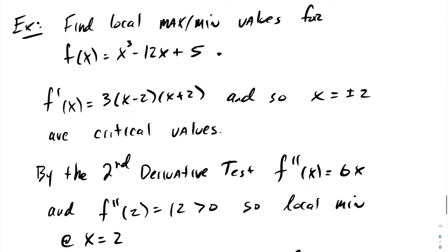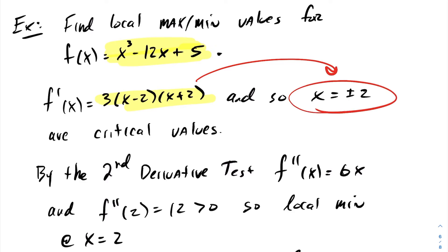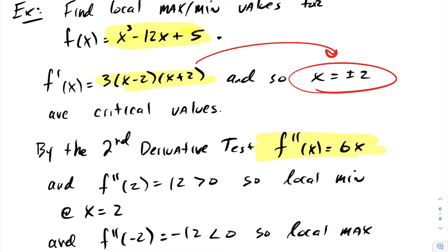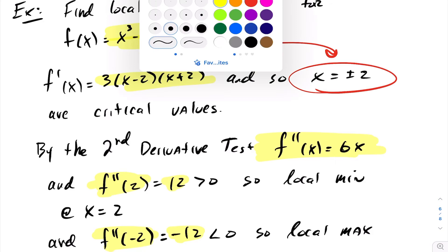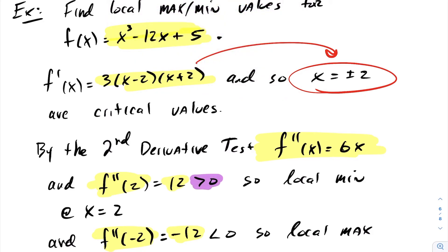Let's take a look at some examples. For our first example, we have a function f at x equals x cubed minus 12x plus 5. If we take our derivative and find our critical values, we find plus or minus 2 as the critical values. Taking the second derivative, we find f double prime at x is 6x. Evaluating at the critical points: f double prime at 2 gives us 12, and f double prime at negative 2 gives us negative 12.